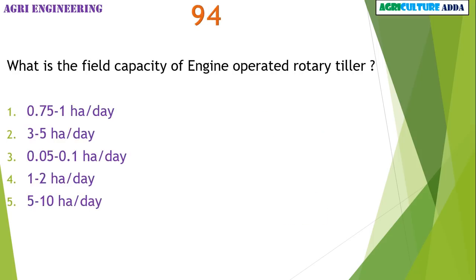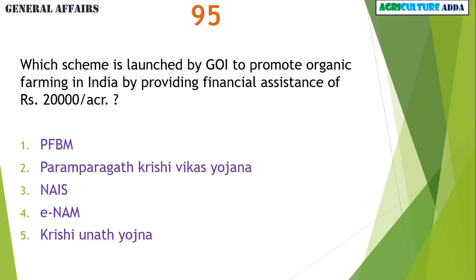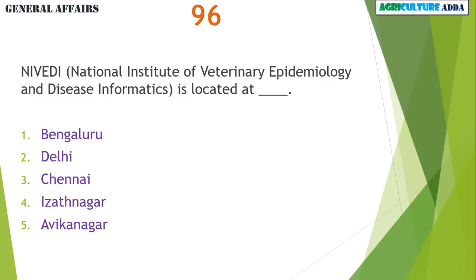What is the field capacity of engine-operated rotary tiller? 0.75 to 1 hectare per day. Which scheme launched by the Government of India promotes organic farming by providing financial assistance of Rs. 20,000 per acre? Paramparagat Krishi Vikas Yojana. National Institute of Veterinary Epidemiology and Disease Informatics is located at Bengaluru.